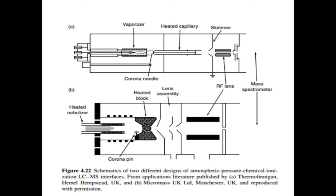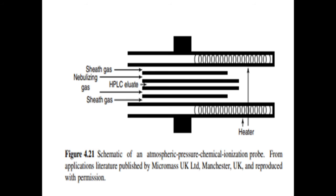The similarity of the hardware required for APCI to that required for electrospray may be seen from comparing figures 4.9 and 4.22, and makes changing between the techniques convenient from a practical point of view. The complementary nature of the two ionization techniques may therefore be readily utilized. Figure 4.21 shows a schematic of an atmospheric pressure chemical ionization probe.